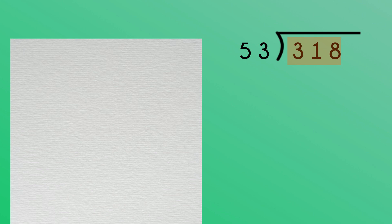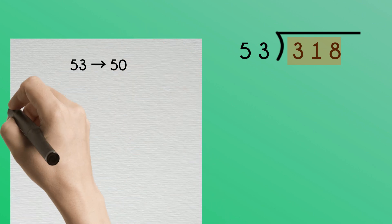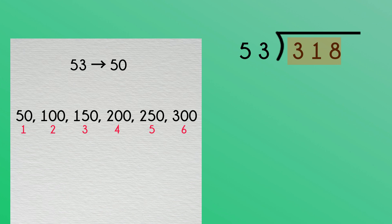For example, we could round 53 to 50. There are six 50s in 300. I estimate 53 will fit into 318 six times. Now it's important to check this. I'll do so by multiplying 53 by 6. This confirms my estimation. 318 divided by 53 is 6.